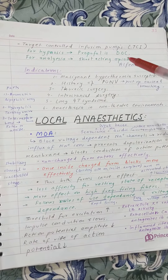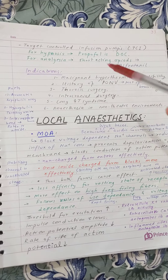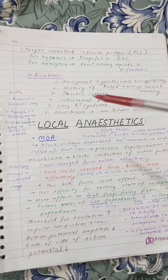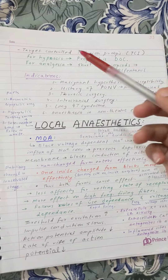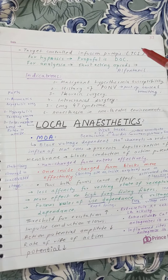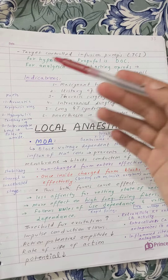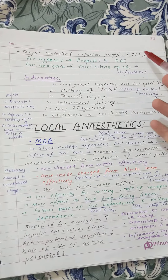For hypnosis, propofol is used, and for analgesia, short-acting opioids like fentanyl are used. These are the indications for Total Intravenous Anesthesia and the Target Controlled Infusion pump. TCI stands for Target Controlled Infusion.